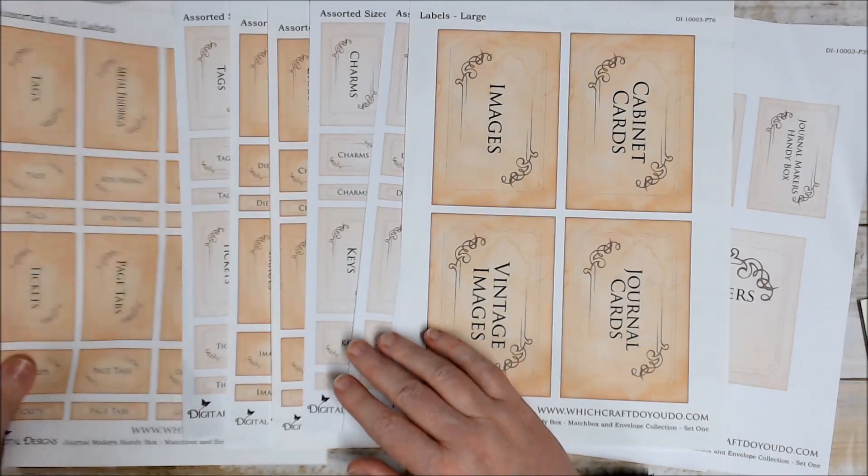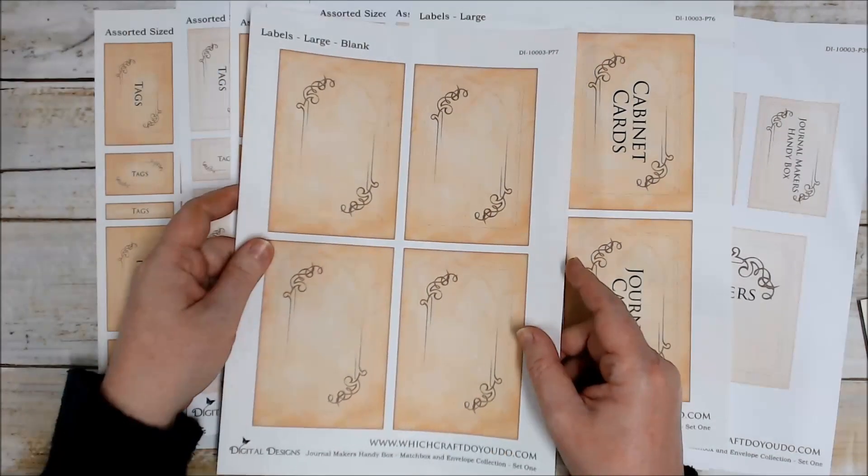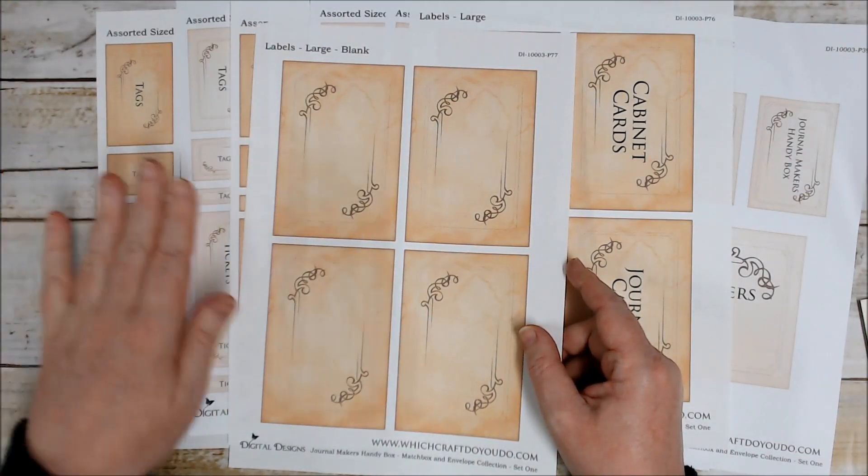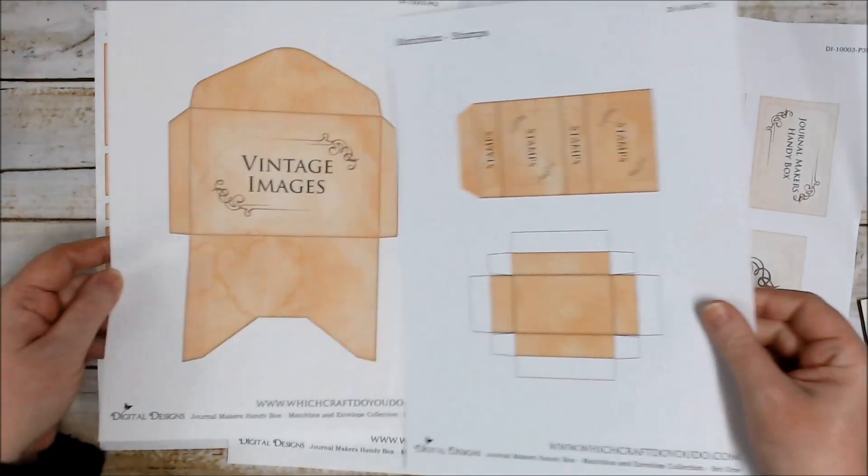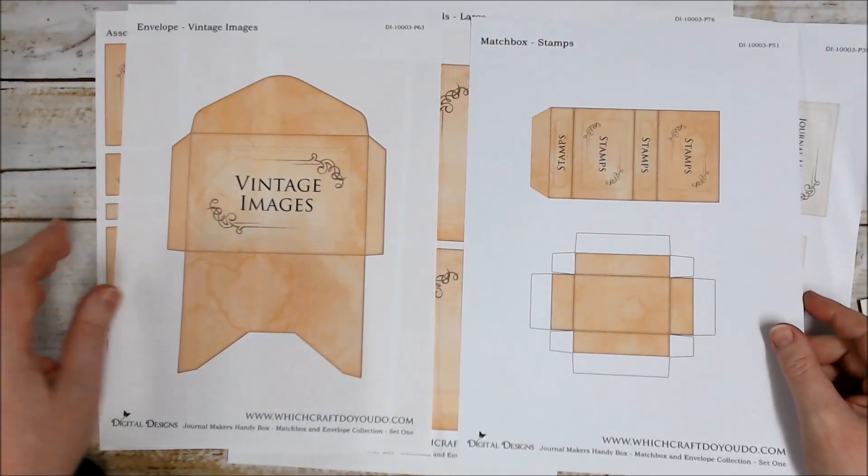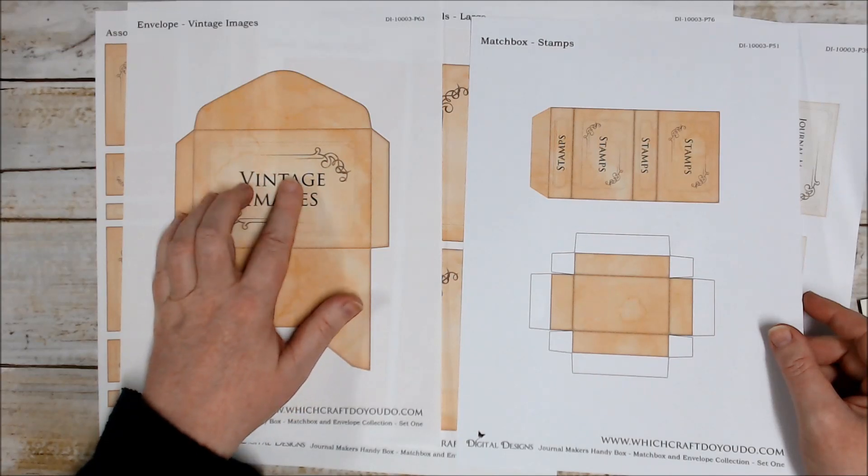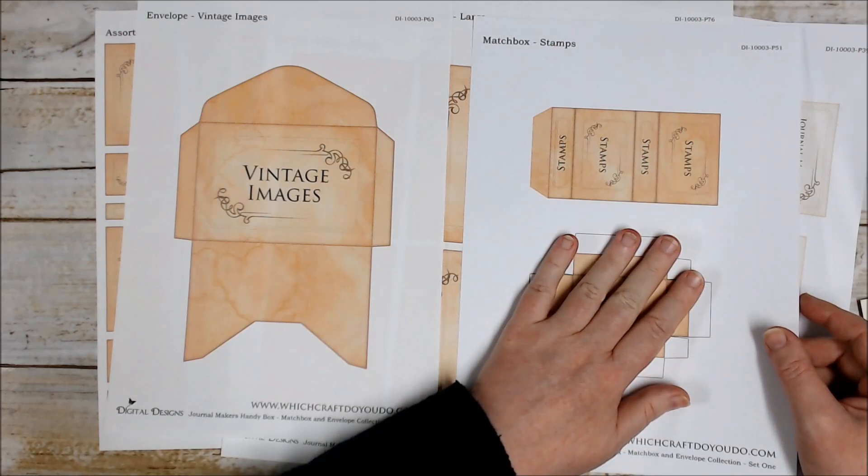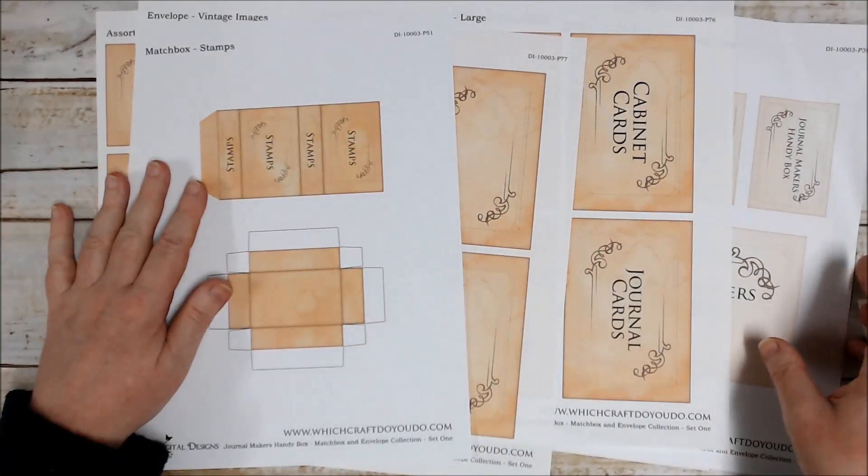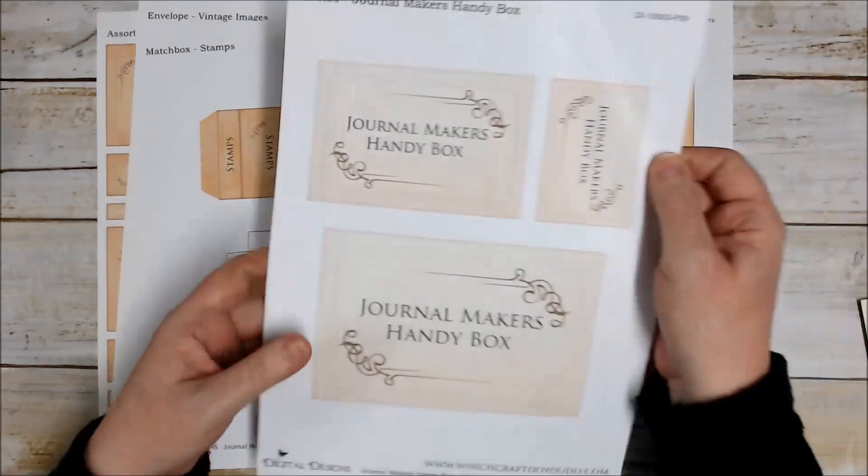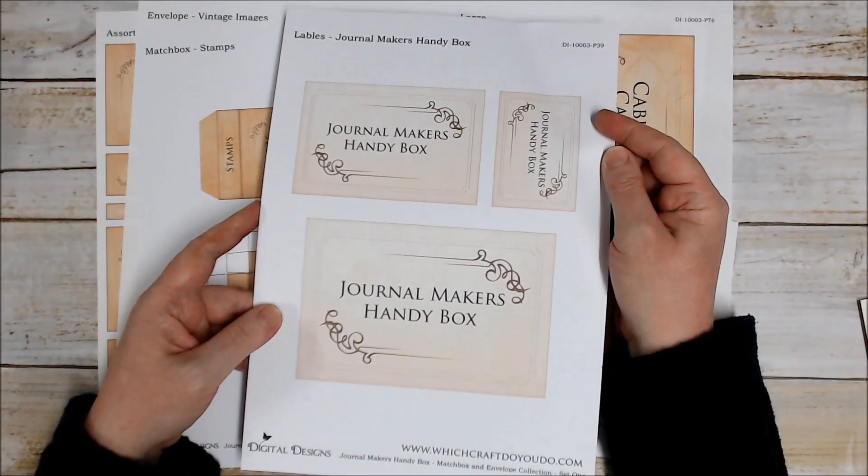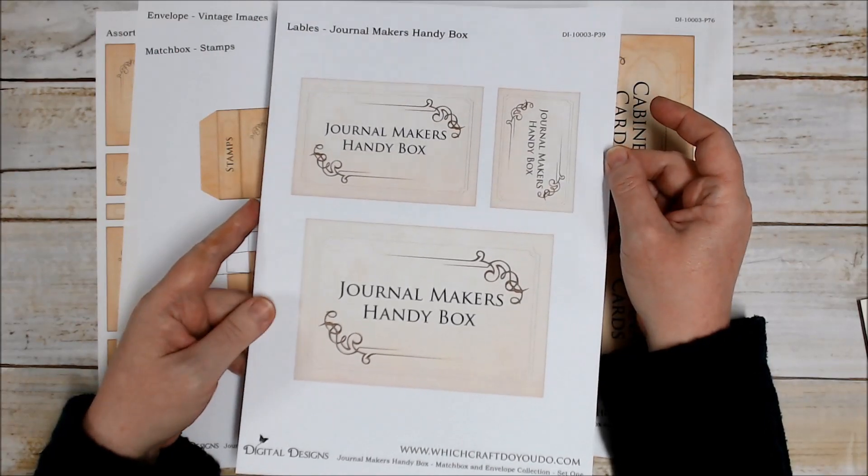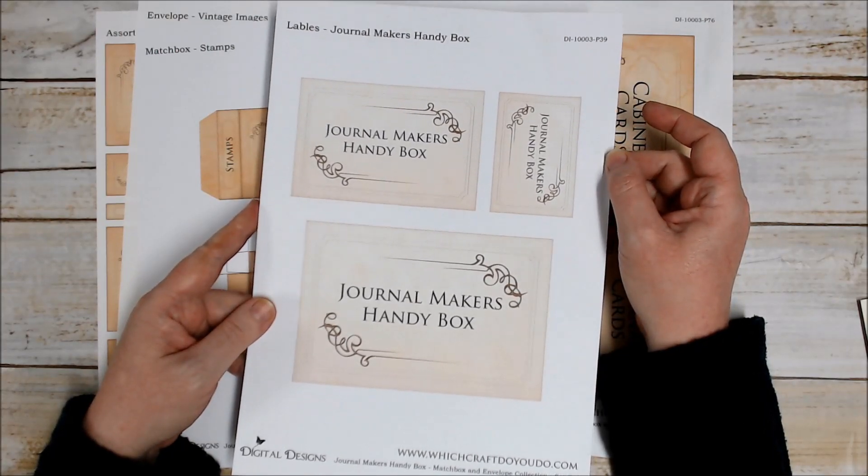You will also get a blank sheet in both sizes. The envelope and matchbox will come with a version that just has all the decoration but doesn't have any text on it. The final thing in the kit will be a sheet of journal makers handy box labels or nameplates in three different sizes, so you can pick which one best suits your project.